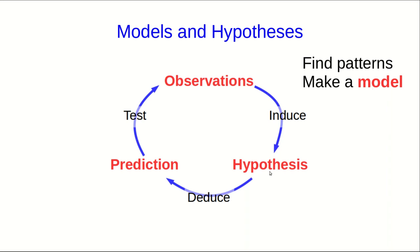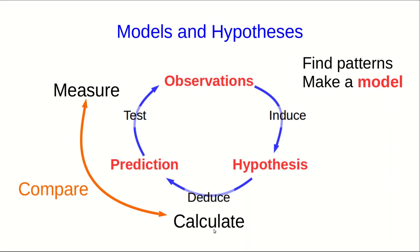A model is an example of a hypothesis, which is just an explanation, or a proposed explanation of some set of observations. That allows us to calculate and make predictions. We now test our predictions in experiments by making measurements, and we compare the measurements to the calculations to see how well they agree. If they agree well, then that gives us more confidence in the model. If they don't, we will have to modify our model or even discard it.